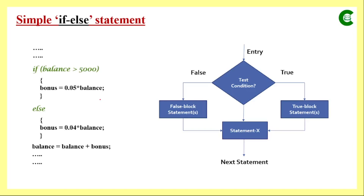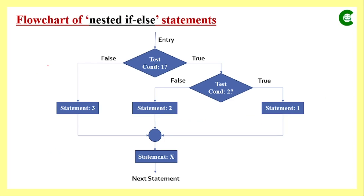This is a sample piece of program where we can see that we have one if and corresponding to that if we have one else. In the if we have one condition checking whether balance is greater than 5000 or not. If it is true then the control goes to that statement; if the result is false then the control comes to the else part and that statement will be processed. Whether the condition is true or false, always the last line will be executed.